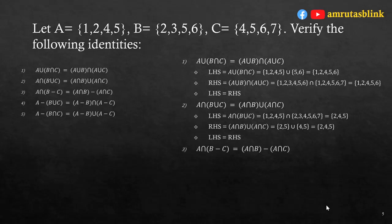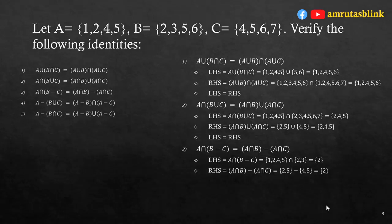For the third identity: A∩(B-C) = (A∩B)-(A∩C). LHS: B-C = {2,3}, so A∩(B-C) = {1,2,4,5}∩{2,3} = {2}. RHS: A∩B = {2,5} and A∩C = {4,5}, so (A∩B)-(A∩C) = {2}. LHS equals RHS, so the third identity is verified.